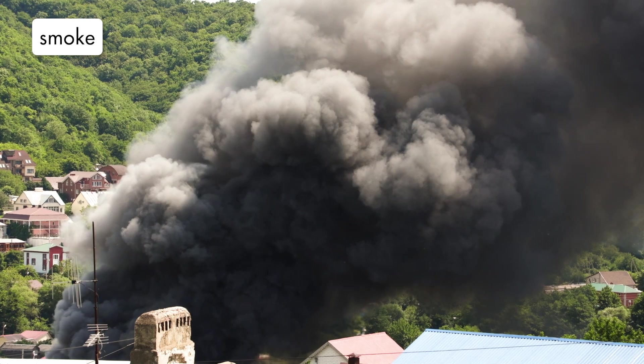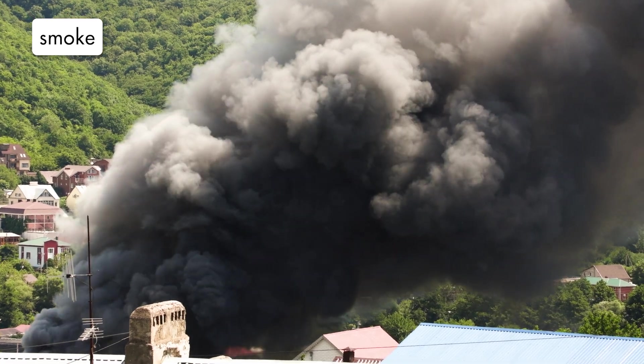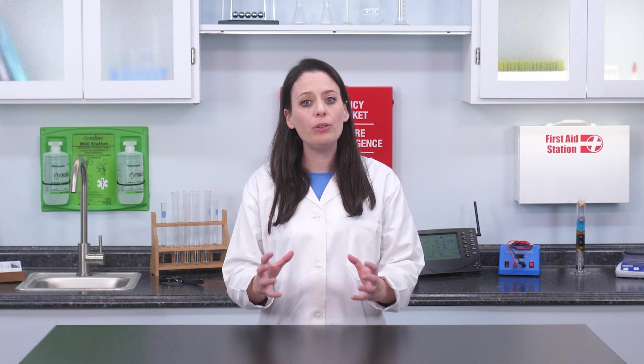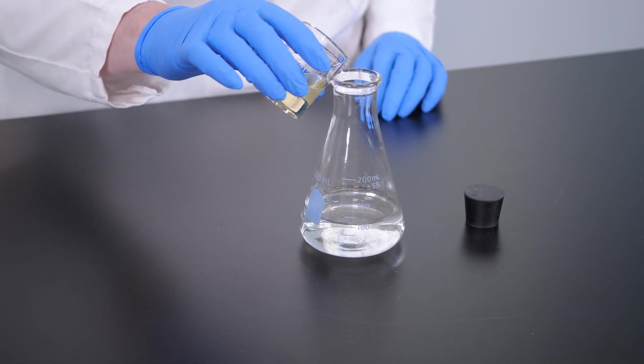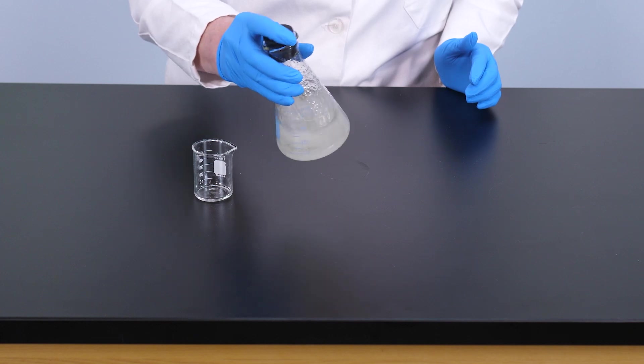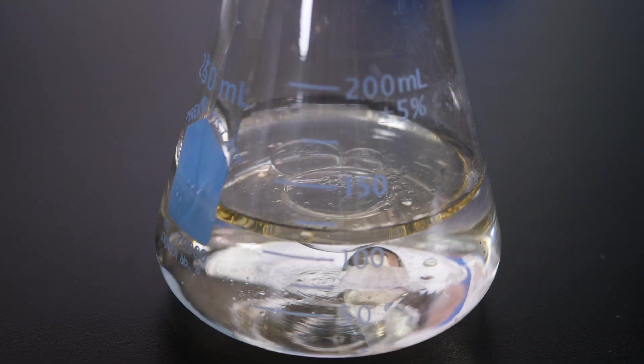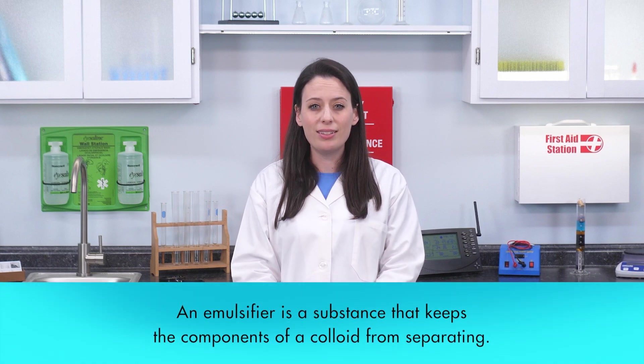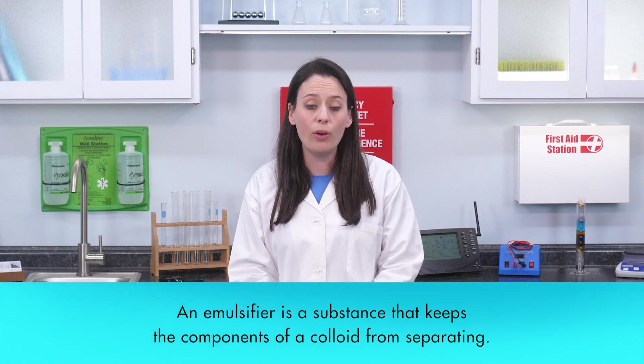Smoke is a colloid of carbon particles dispersed in air. One kind of colloid is formed by two liquids that do not ordinarily mix. Vegetable oil and water do not mix well because molecules of water and droplets of oil repel each other. Even if we vigorously shake the mixture, the oil separates from the water, and the droplets float to the top of the water. To form a colloid with oil and water, we need an emulsifier. An emulsifier is a substance that keeps the components of a colloid from separating.